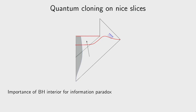This paradox highlights the importance of the black hole interior in formulating the information paradox. For a star there is no smooth, empty interior where you can stretch a slice to have information in two places simultaneously. This paradox arises precisely because the black hole has a smooth interior, making it clear that the information paradox is difficult to resolve if we insist on preserving the smoothness of the horizon.